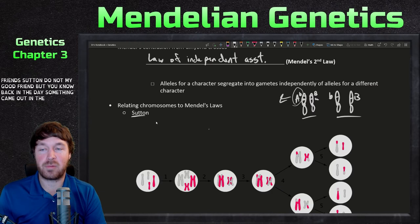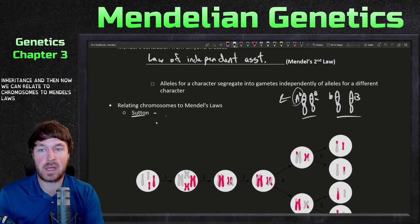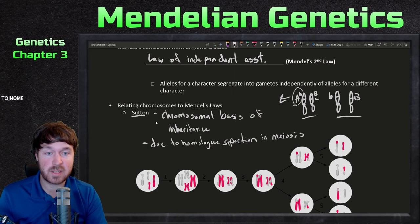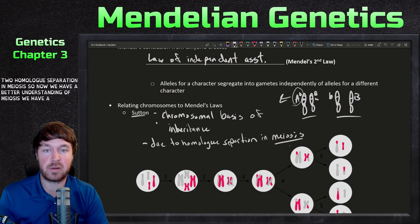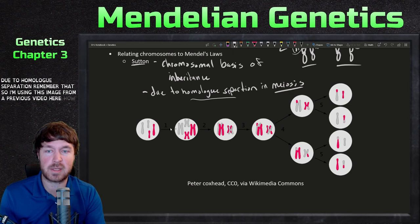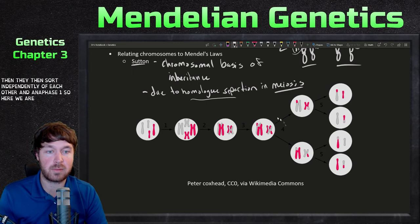Not only that, you can relate all his work back to what we now know of meiosis. Sutton was one of the original describers of the chromosomal basis of inheritance. He made the statement that it is due to homologue separation in meiosis. Now we have a better understanding of meiosis and chromosomes, and that Mendel's discoveries were due to homologue separation. Chromosome duplication occurs, the homologue pairs line up, crossing over could occur between each homologous pair, and then they sort independently of each other in anaphase one.